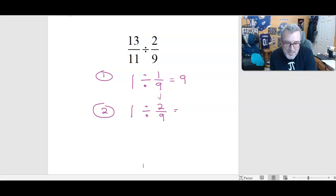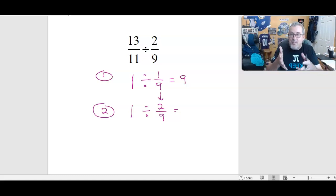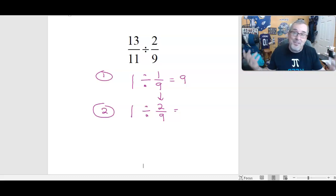And the way we thought about this was this. 2/9 is twice as big as 1/9. Because what is 2/9? It's two copies of 1/9. It's 2 times 1/9. It's 2/9. And so it's twice as big.